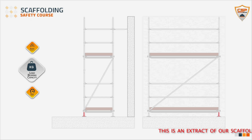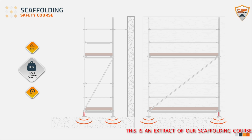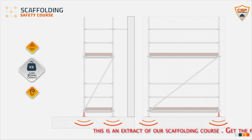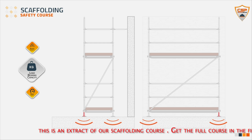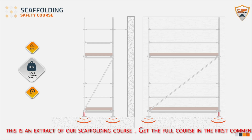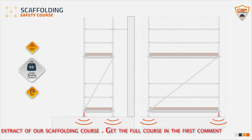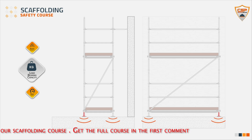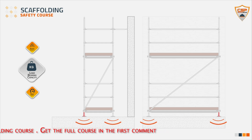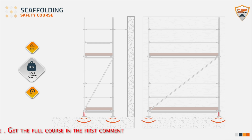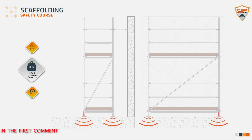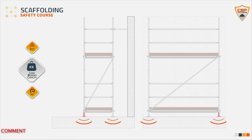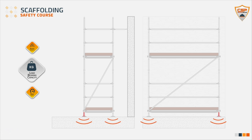Base plates and sole boards. Base plates are crucial for transferring the load from the standards to the ground. They spread the weight of the scaffold and its loads over a larger surface area, reducing the risk of sinking or instability on soft or uneven ground. By providing a stable and level foundation, base plates help ensure that the scaffold remains upright and secure, even under varying load conditions. They also protect the ground surface from damage by distributing the load evenly. Base plates are flat, square or rectangular metal plates that sit at the bottom of the standards, typically with a central spigot or socket to secure the standard and distribute the load over a larger area.